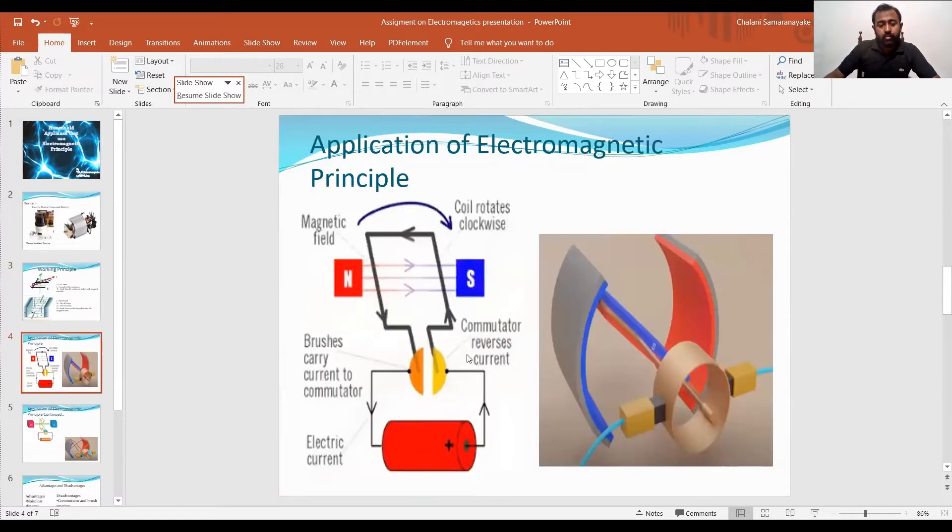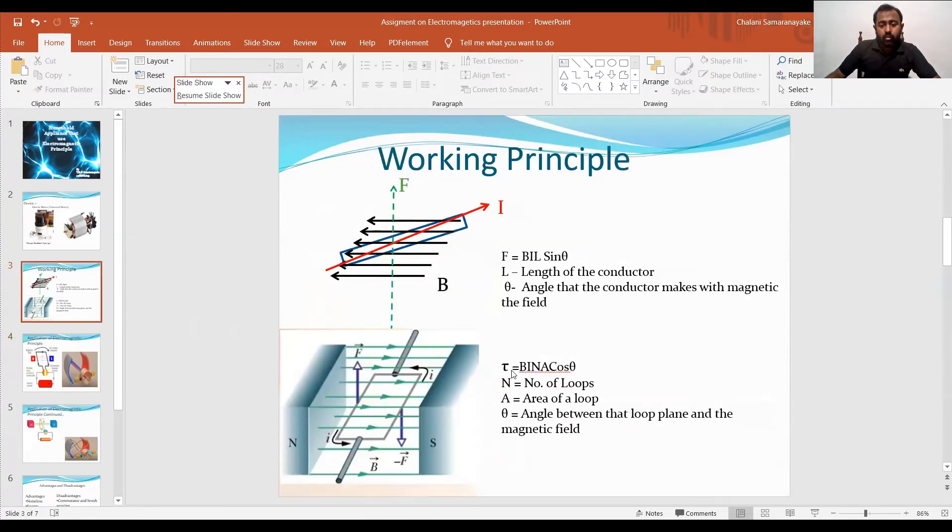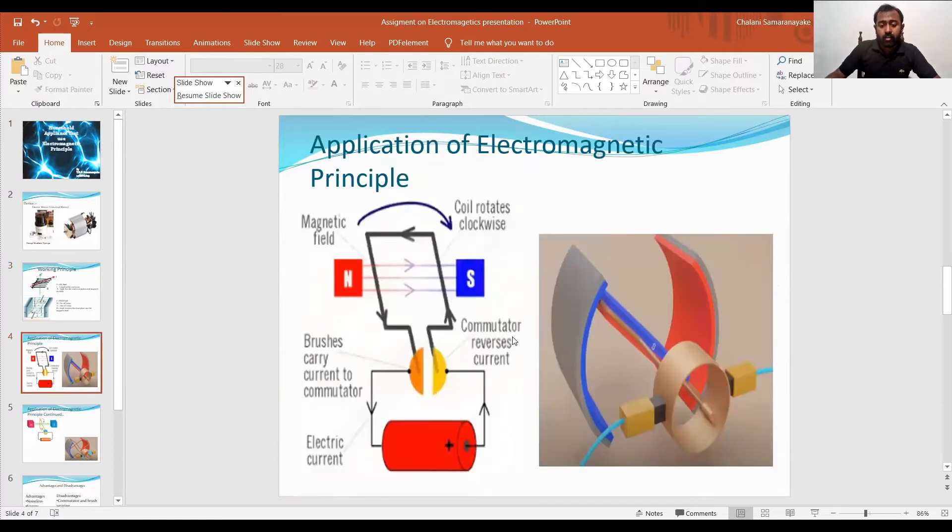If you look at the principle, there is a loop and we have this magnetic field. In order to maximize the torque, torque is given by BIAnN cos theta, cos theta should be maximum, that should be 1. If cos theta equals 1, theta should equal 0, that means the plane of the loop should be parallel to the magnetic field. Therefore, it is important to have the magnetic field in a radial direction.